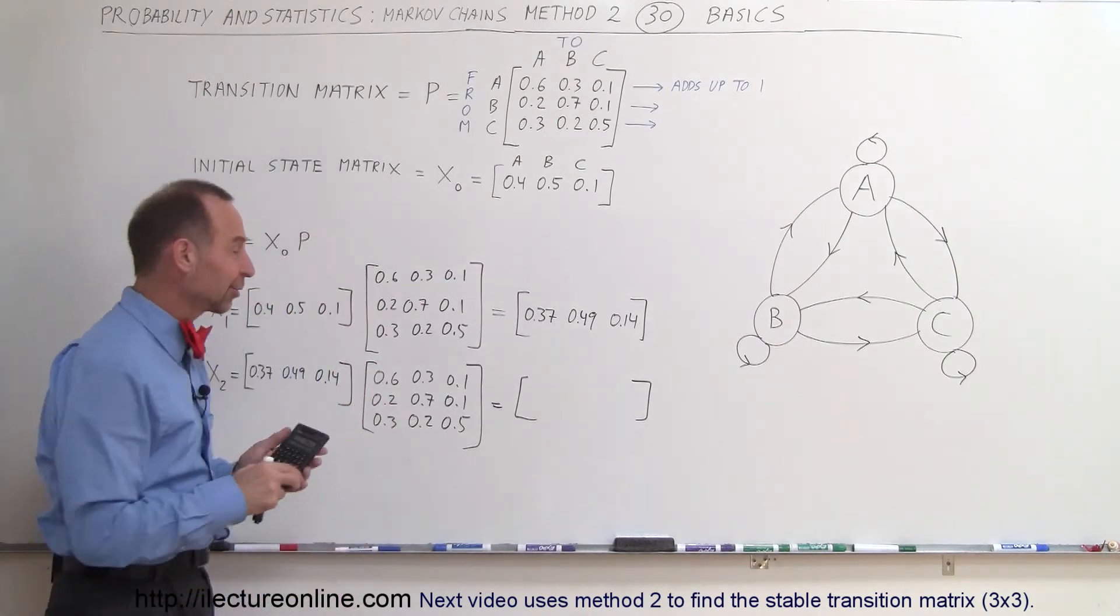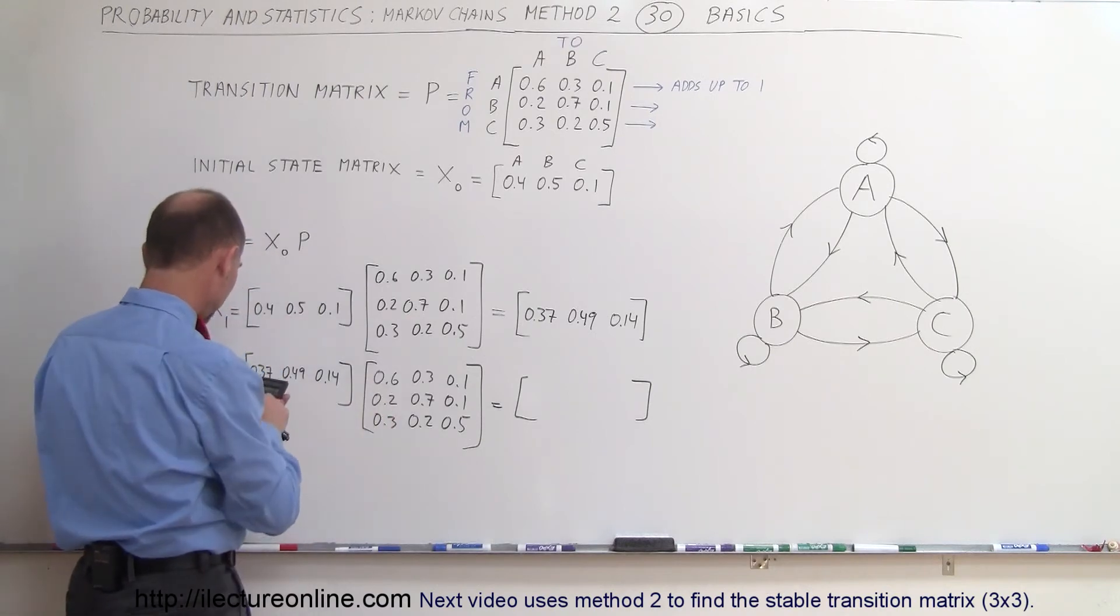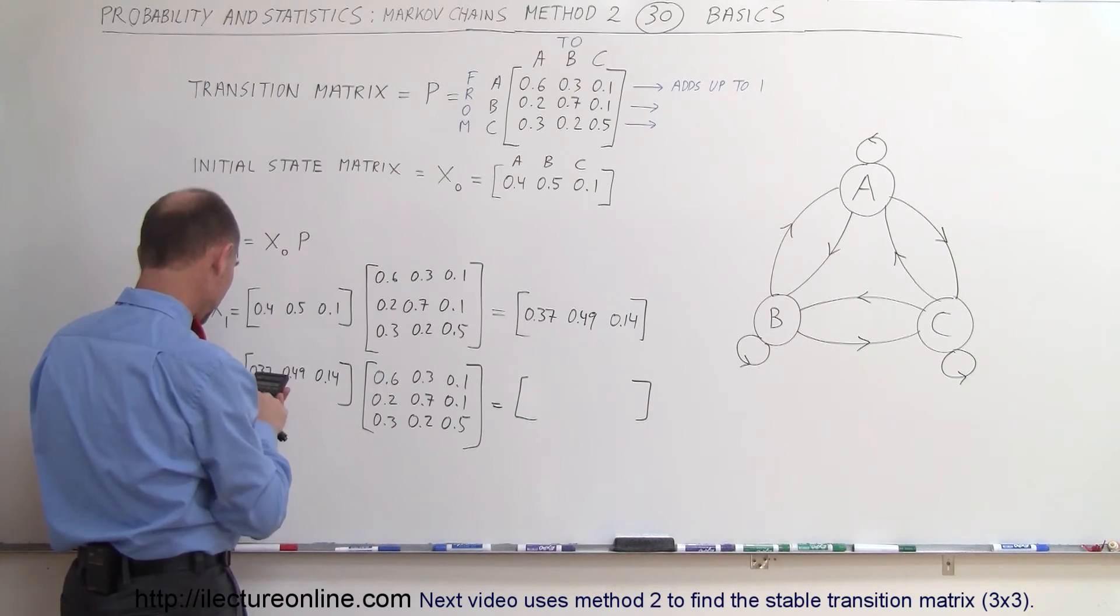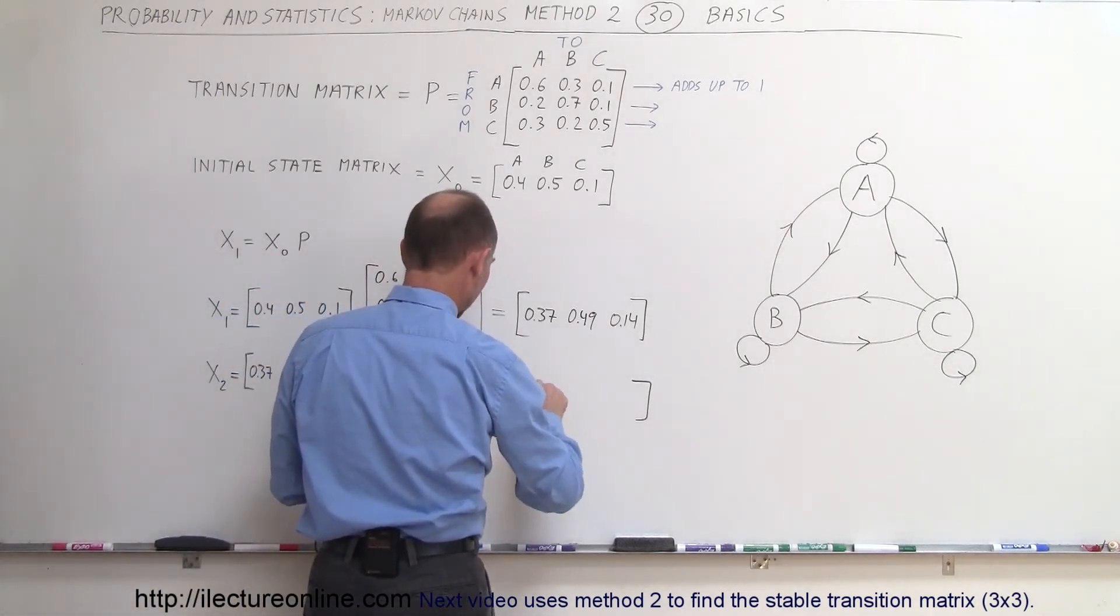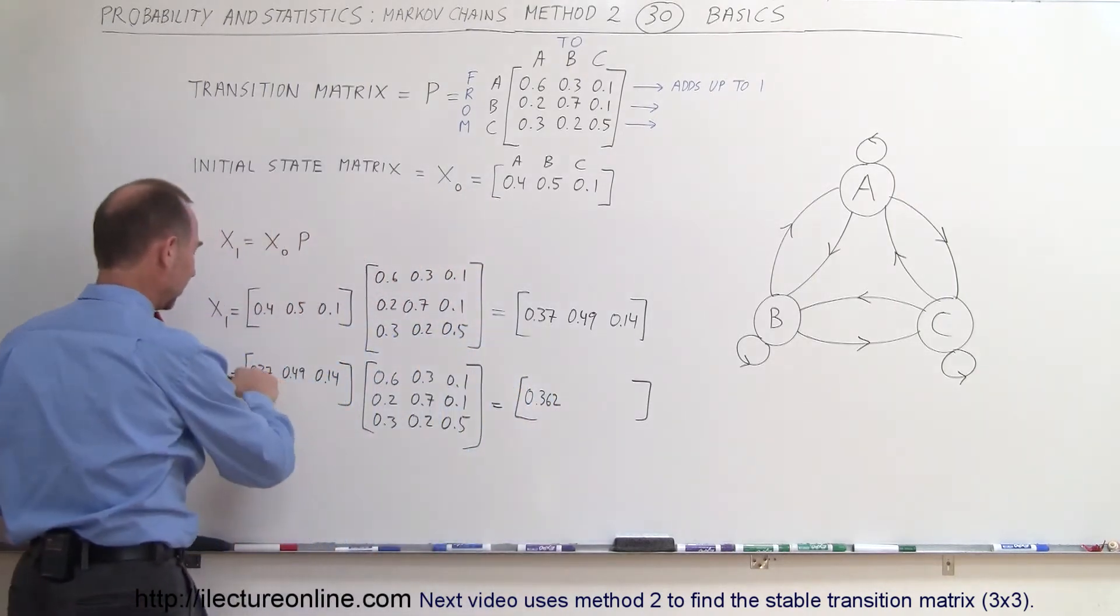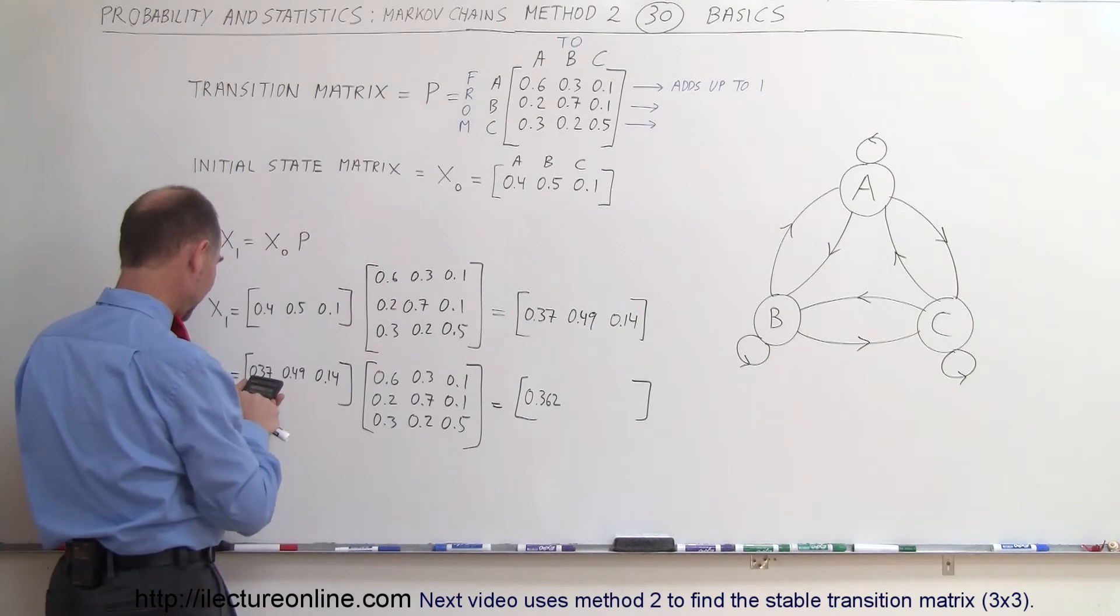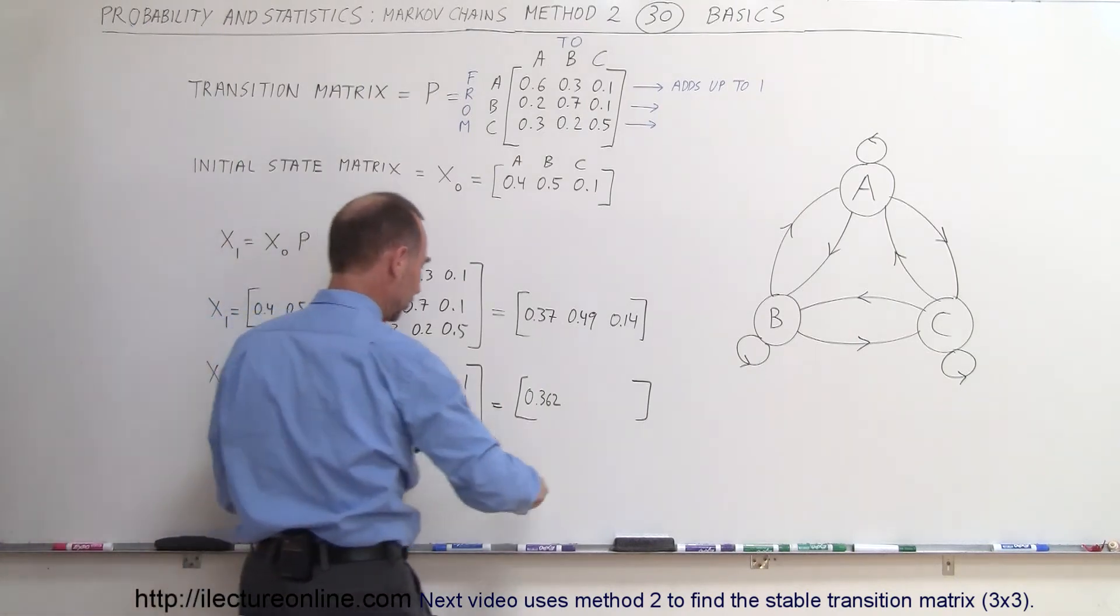In this case I'll elect to use my calculator so this row times this column so 0.37 times 0.6 plus 0.49 times 0.2 plus 0.14 times 0.3 equals and I get 0.362 0.362. My next element it's this row times this column so 0.37 times 0.3 plus 0.49 times 0.7 plus 0.14 times 0.2 equals I get 0.482 0.482.